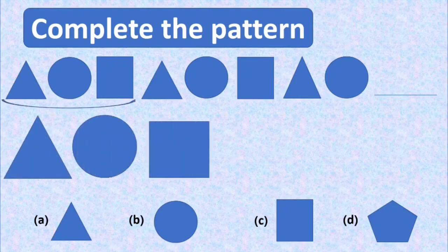Look carefully students. Actually, this pattern is a repetition of a group of three shapes. First is a triangle, then a circle, and then a square. Again the same group is repeated. Triangle, circle, and square.